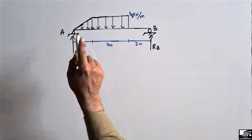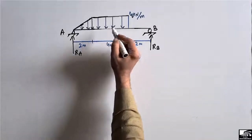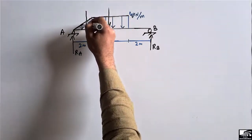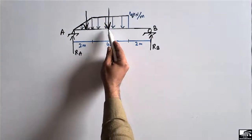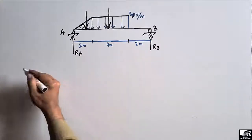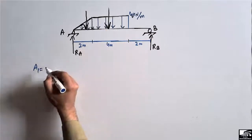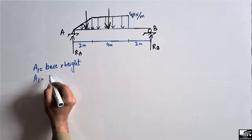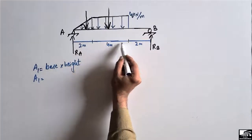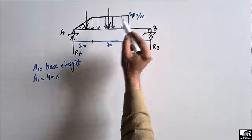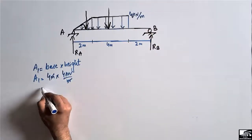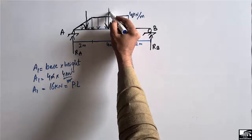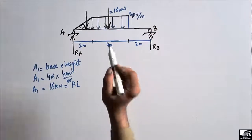We need to find the equivalent point load for each shape. For the rectangle, the area A1 equals base times height. The rectangle has a base of 4 meters and a height of 4 kilonewtons per meter, giving us 16 kilonewtons. This is the equivalent point load of the rectangular load.